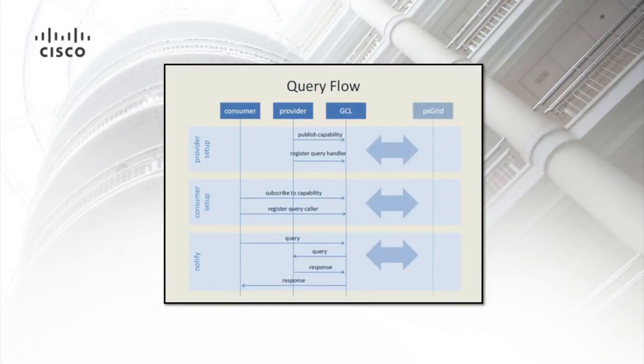Here's a basic flow for a consumer query and a provider's response. The provider first publishes the capability and registers a handle for any queries made to this capability. Now any node can consume this capability. A consumer first subscribes and then registers their query caller. Now queries can be sent and responded to across the grid freely.